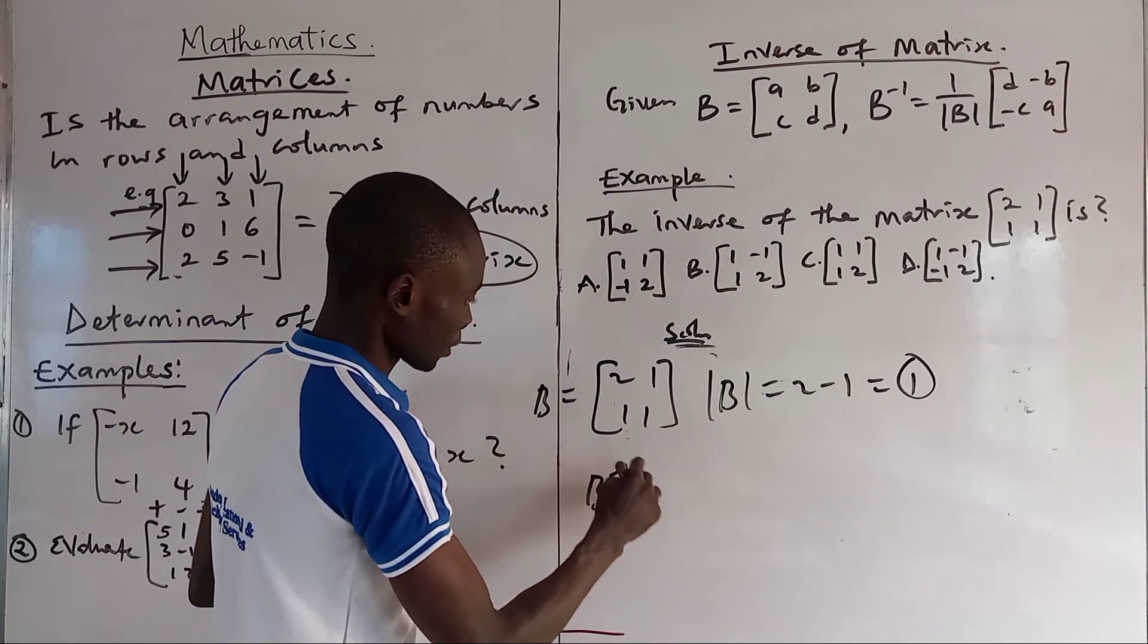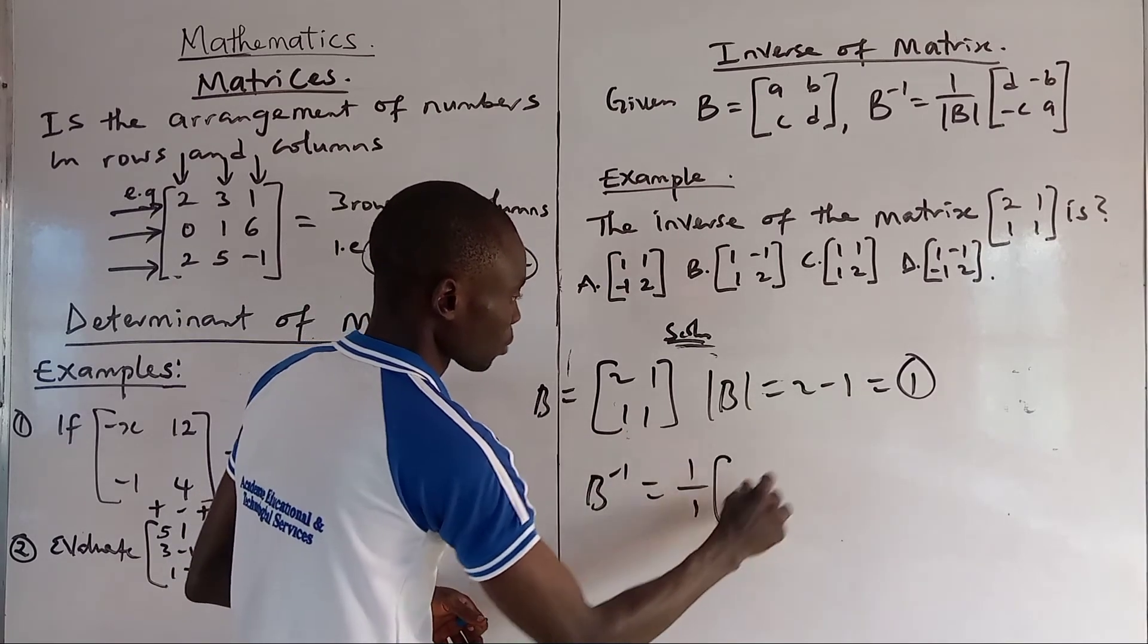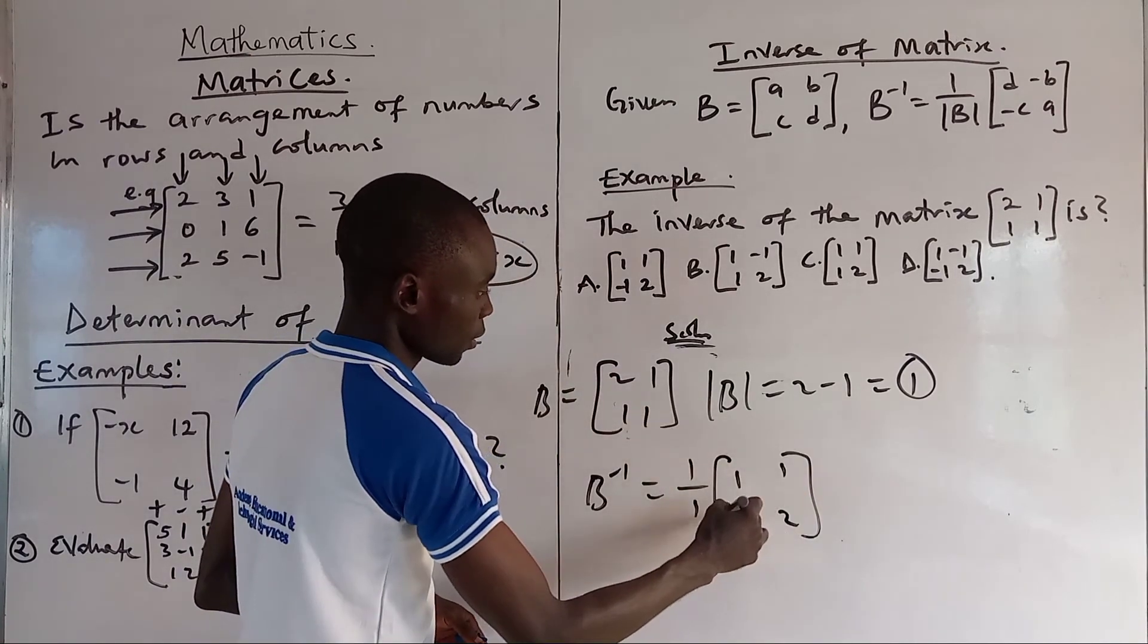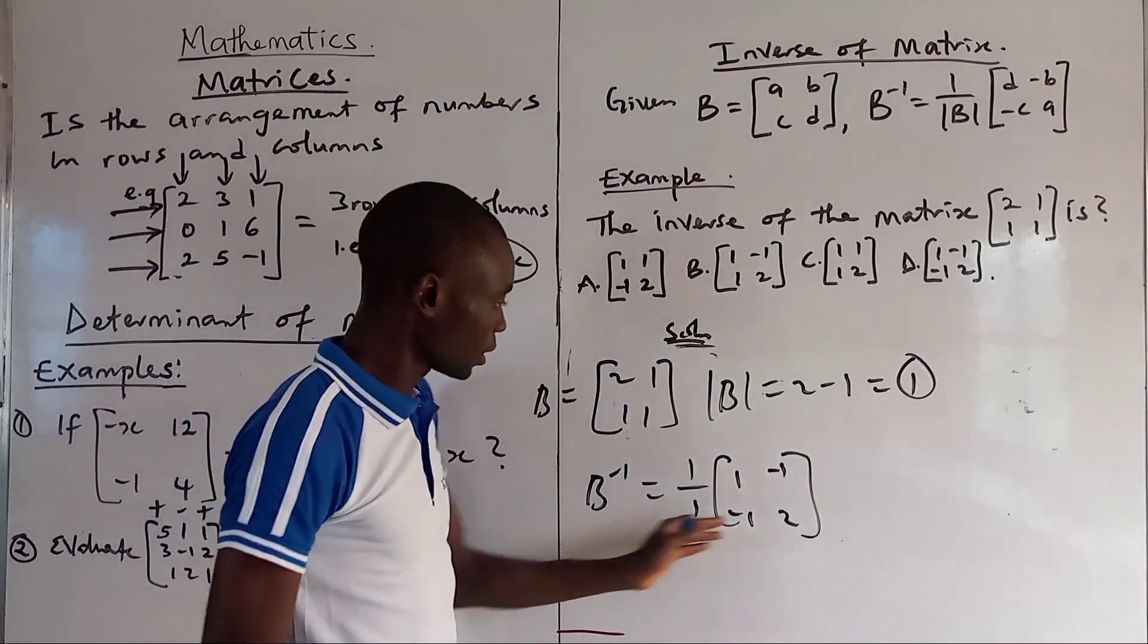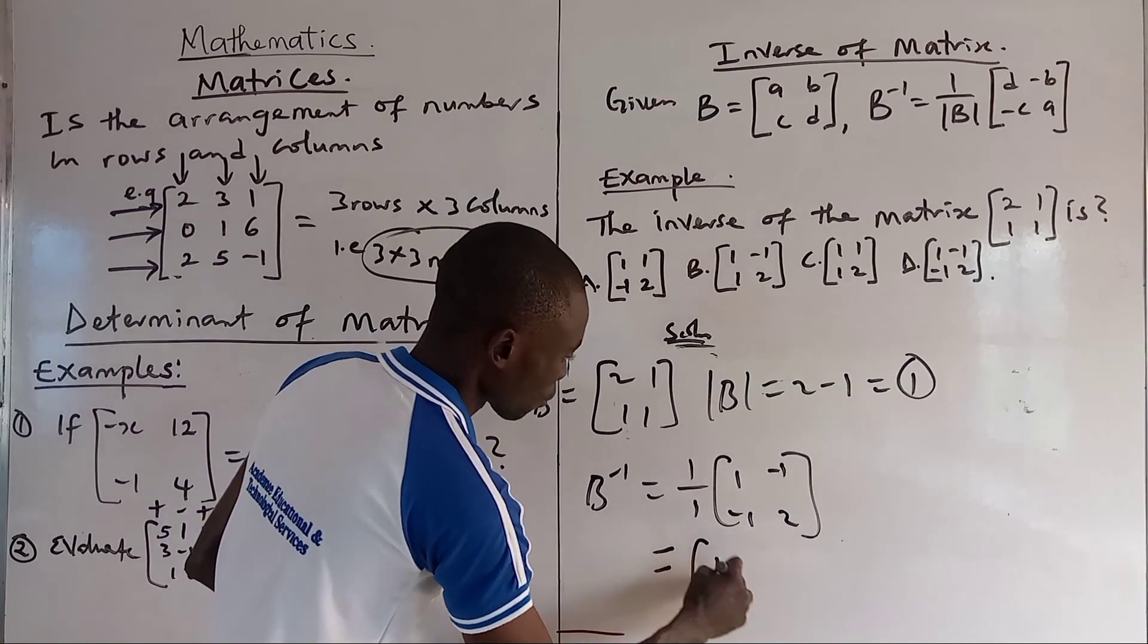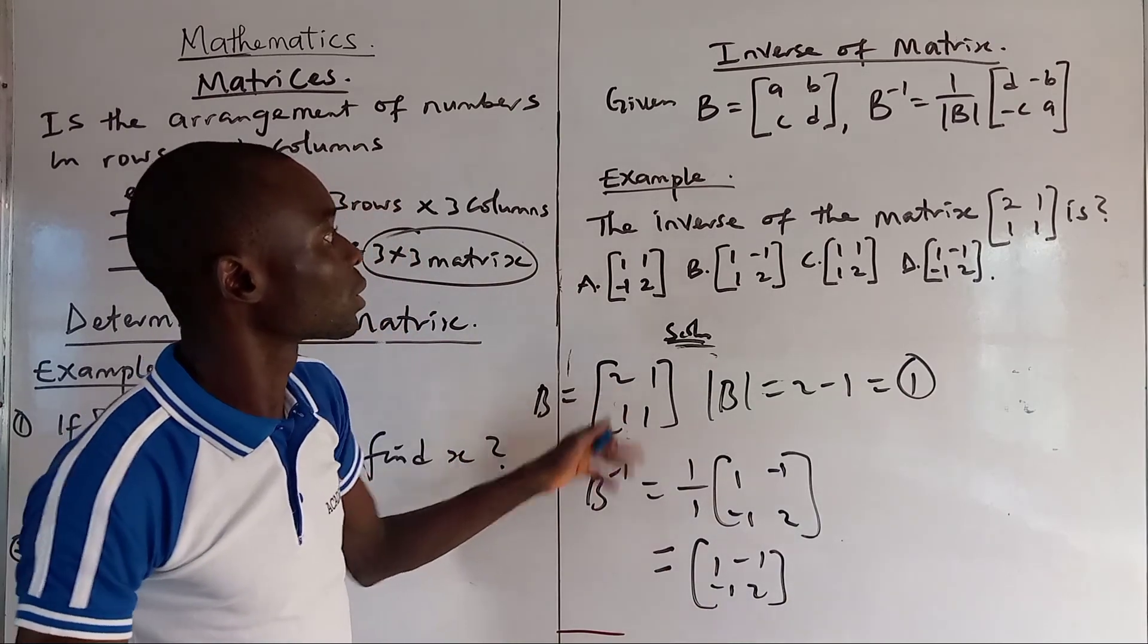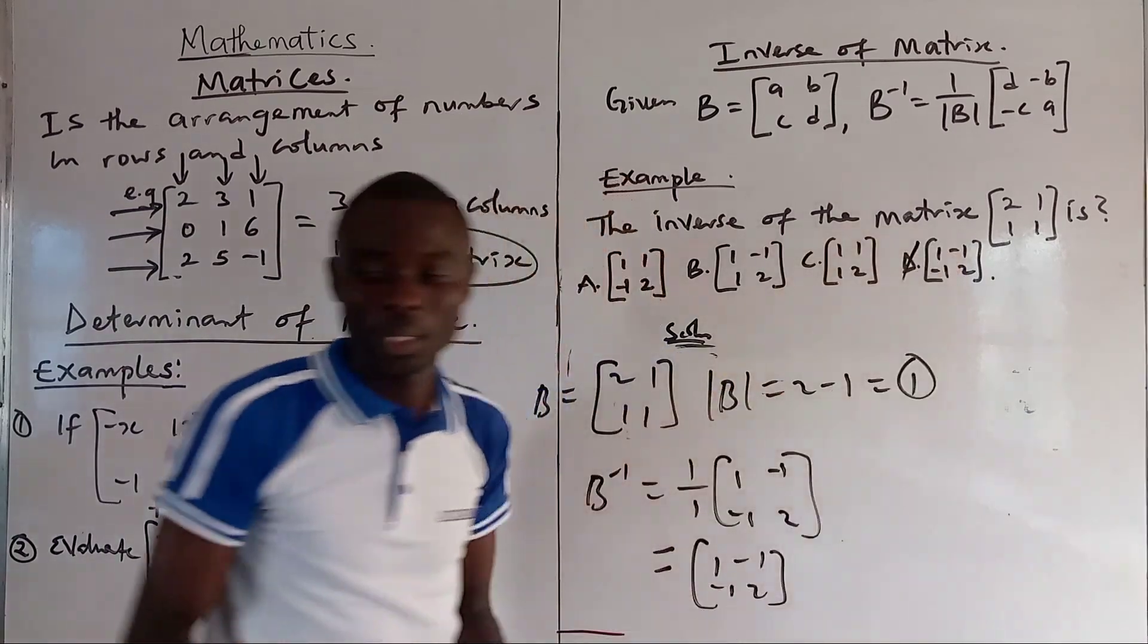Then we now interchange the given matrix. We want to find the inverse now. 1 over 1 is determinant into brackets. 1 we have to come up, remove 2 up. Then through the remaining ones, we apply minus. And when we multiply this, this 1 over 1 times this, we still get back 1, minus 1, minus 1, 2. So this is the answer, the inverse of this given matrix. When you choose the object, we get the option. It's option D.